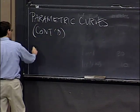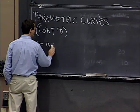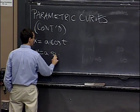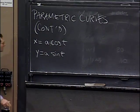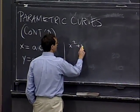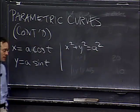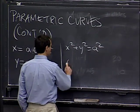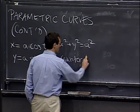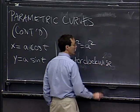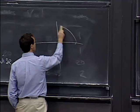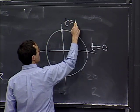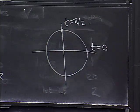Last time we talked about the parametric representation for the circle, or one of the parametric representations for the circle. We noted that this does parametrize the circle — it satisfies the equation for the circle, and it's traced counterclockwise. The picture looks like this: here's the circle. It starts out here at t equals 0, and gets up to here at t equals pi over 2.